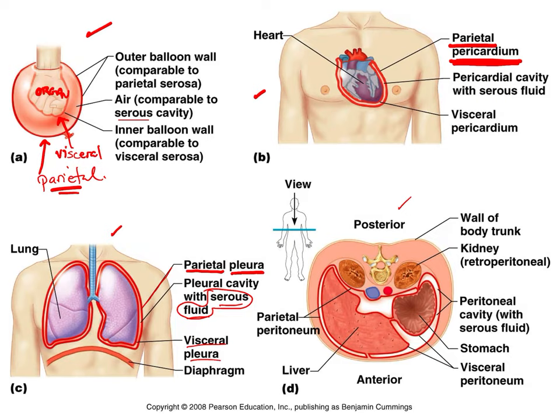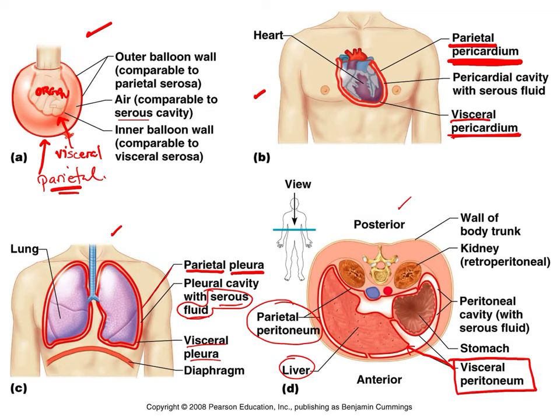For the heart: the parietal pericardium lines the cavity wall, the visceral pericardium covers the heart itself, and pericardial fluid fills the space between them. For the abdominopelvic cavity: the visceral peritoneum covers the organs (like the liver shown here), the parietal peritoneum lines the outer cavity wall, and peritoneal fluid allows the abdominal organs to change shape and move.